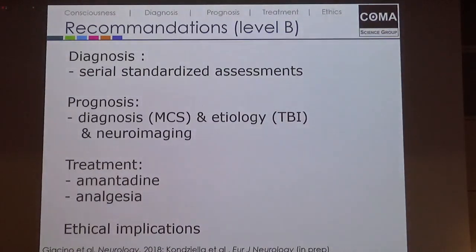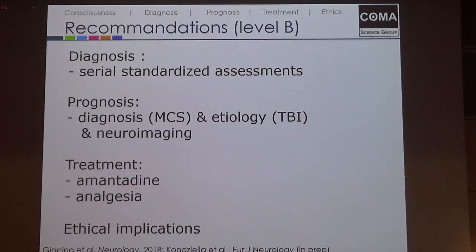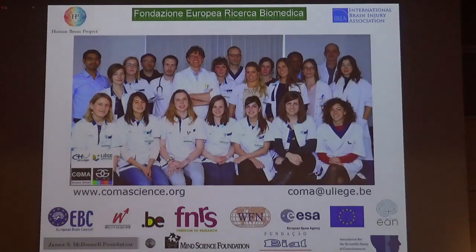In summary, all of this is level B evidence. It is proposed to perform serial standardized assessments, and when discussing prognosis with families, to note that outcomes are better for minimally conscious state patients and for post-traumatic patients, with a role for neuroimaging that needs further validation. We briefly discussed the role of amantadine and the ethical implications. Thank you for your attention.